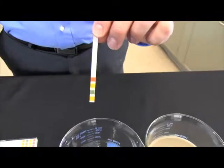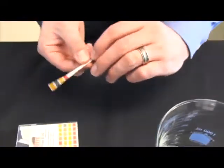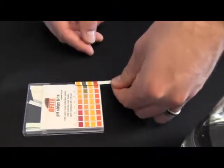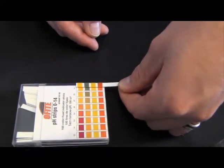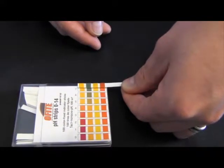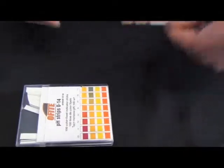First dip the pH strip into the water. You'll notice that the pH strip has changed colors. Compare those colors to the chart. You'll notice that this water has a pH of 7.